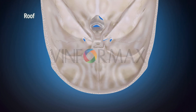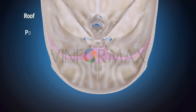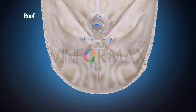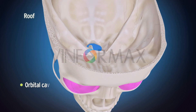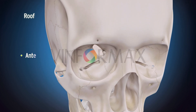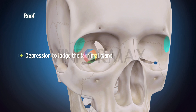The roof is formed anteriorly by the orbital plate of frontal bone and posteriorly by the lesser wing of sphenoid bone. It separates the orbital cavity from the anterior cranial fossa. In the anterolateral aspect of the roof, there is a depression to lodge the lacrimal gland, known as the lacrimal fossa.